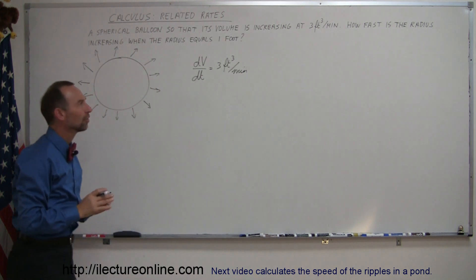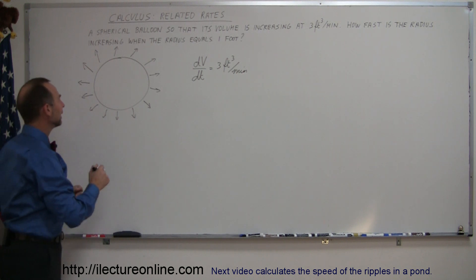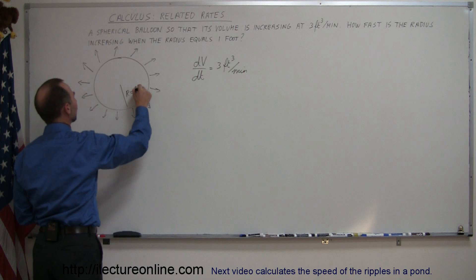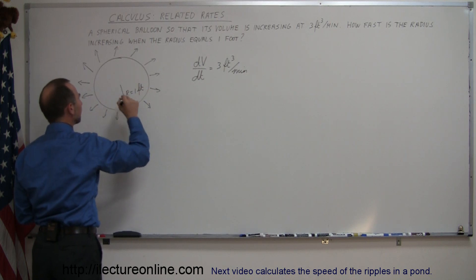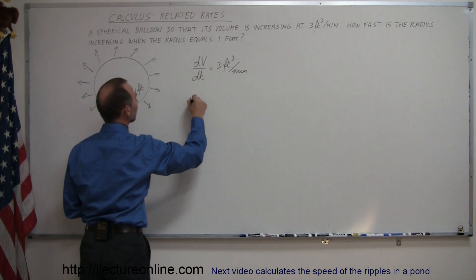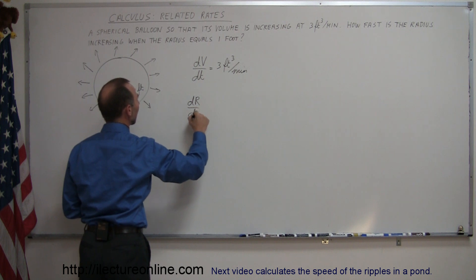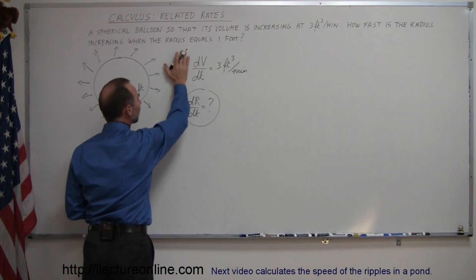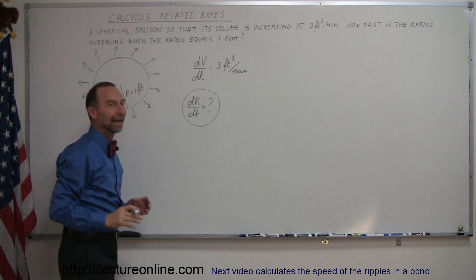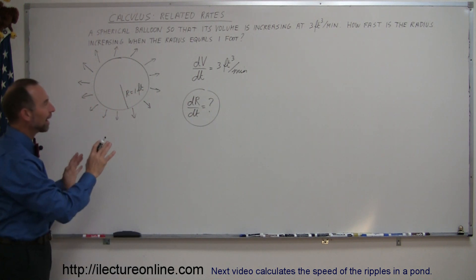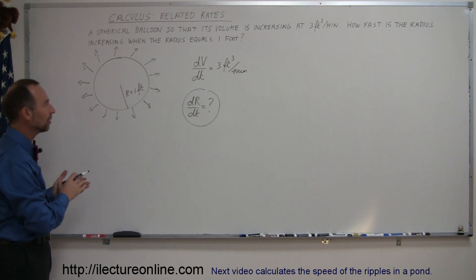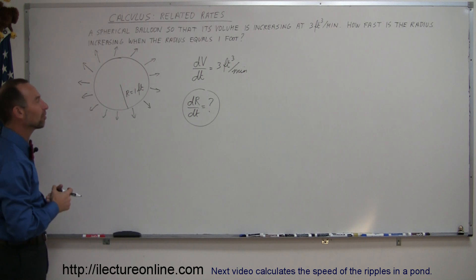Alright, so that defines the change of the volume. Then when the radius equals 1 foot, at that moment, they want to know what is the change in the radius per unit time. This is what they're asking for. So we're given this and that's what we're asking for. And once you do that, once you define the change in the volume, the change in the rate and so forth, the change in the radius in a mathematical form like that, now you have a way to go about solving the problem.